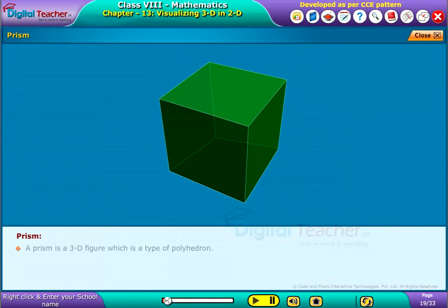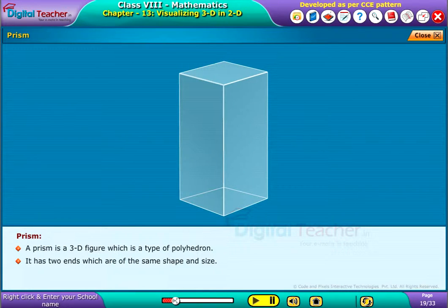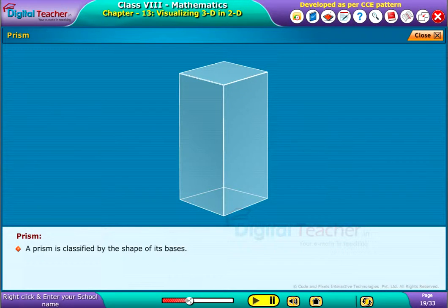Prism: A prism is a 3D figure which is a type of polyhedron. It has two ends which are of the same shape and size. A prism has two parallel congruent sides which are called bases. A prism is classified by the shape of its bases.